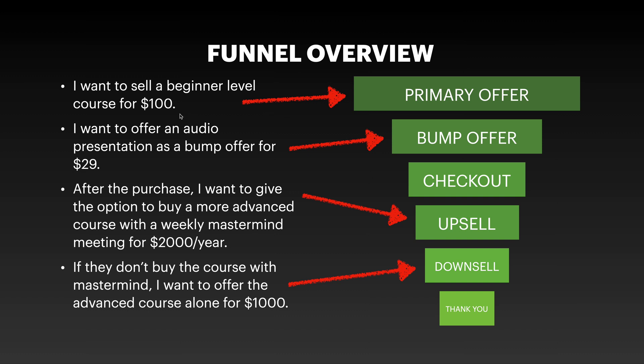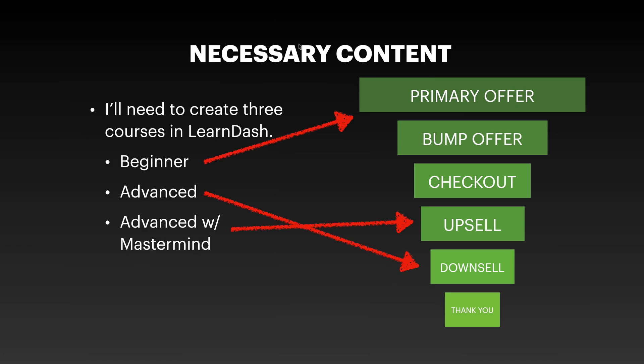So we're going right from a $100 offer up to a very expensive offer. If they don't take that, we'll go to a downsell which is an advanced course alone without the mastermind for a one-time price of $1,000. Finally, they'll be taken to a thank you page. This is a very common type of sales funnel - if you're selling any sort of high-end consulting, you offer something a little more affordable and then right away you can offer something higher end to people who want more results right away.